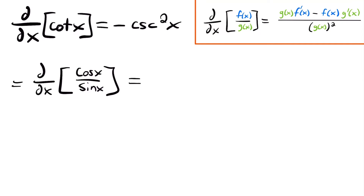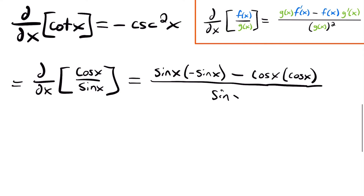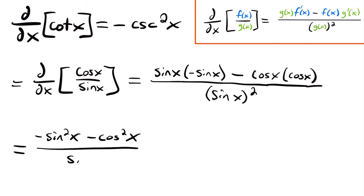We're going to have that this is equal to our denominator function, sine x, multiplied by the derivative of our numerator function, cosine. The derivative of cosine is negative sine x. Then we're going to subtract the numerator function, cosine x, multiplied by the derivative of the denominator. The derivative of sine x would be cosine x. Our final step is to divide by the denominator function squared, so we'll have sine x squared. Simplifying, we'll have negative sine squared x minus cosine squared x, all divided by sine squared x.